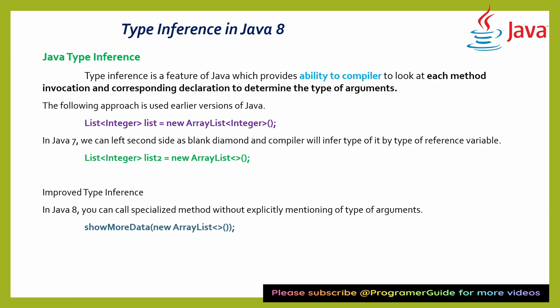Here, type inference — see why this type inference came into the picture. Earlier we were using generic types to create objects. We were using generics for type declaration, but now it is not required. By using type inference you can create an object with empty angular brackets — that means empty generic — and later you can add the type when you are calling that method.